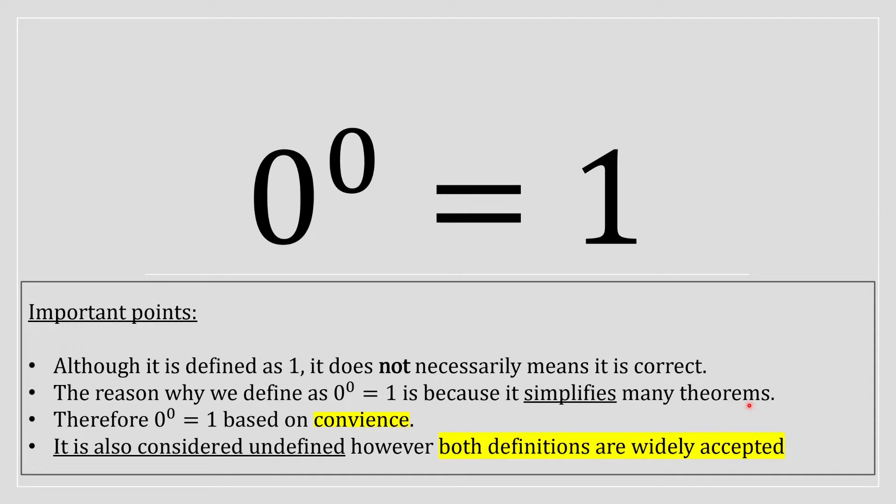So it's basically 0 to the power of 0 is equal to 1 just based off convenience. And a lot of people consider it undefined, but however, both definitions are widely accepted. So either way you proceed with this, both definitions are fine.